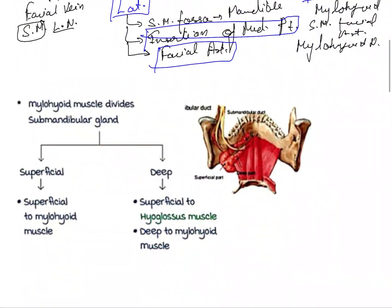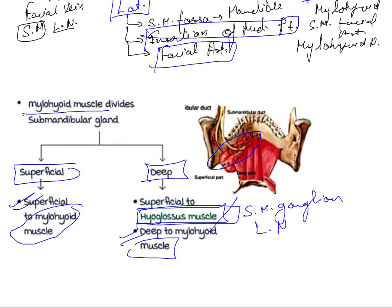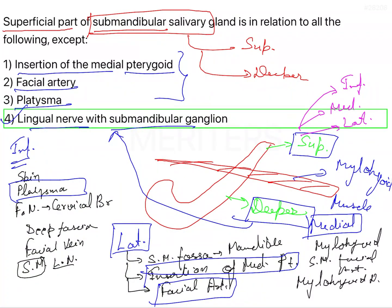To summarize: the superficial and deeper parts of the submandibular gland are divided by the mylohyoid muscle. The superficial part is superficial to the mylohyoid. The deeper part is superficial to the hyoglossus but deep to the mylohyoid. The submandibular ganglion and lingual nerve are deeper to the deeper part of the gland. Therefore, option 4 is the correct answer — it relates to the deeper part, not the superficial part.